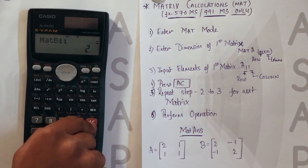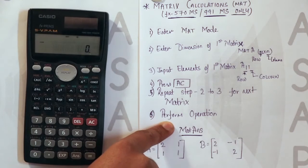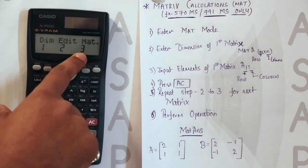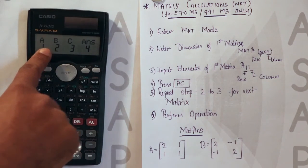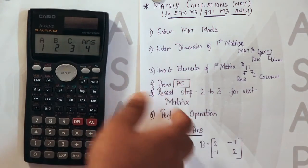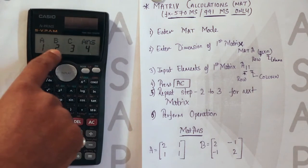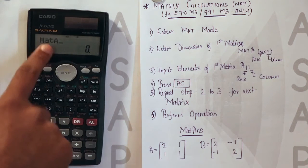Again we press the AC button. Now if you want to perform the operation. We will again press shift then 4. Then you can see this mat option 3. Now on which matrix you had entered you need to perform the operation. You will select those matrices. Now we have entered for matrix A and matrix B. So what we will do. We will select 1. So mat A.